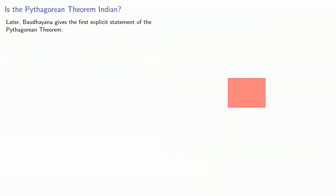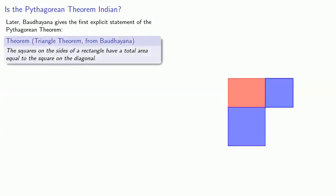A little later on, Baudhāyana gives the first explicit statement of the Pythagorean theorem. The squares on the side of a rectangle have a total area equal to the square on the diagonal. Note that this formulation of the relationship is in terms of the sides and diagonal of a rectangle and not in relationship to a right triangle.